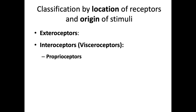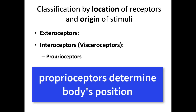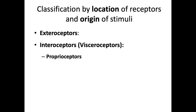Proprioceptors are a special type of interoceptor that helps us determine our body's position in space. Notice that all three of these receptor types don't have a 're' in them — so for example, it's an exteroceptor, not an extroreceptor.